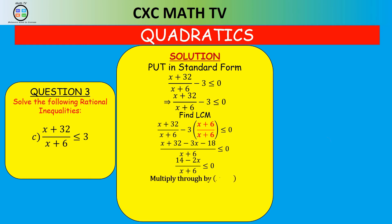We multiply through by the square of the denominator. One of the X plus six terms cancels with the other, so it simplifies to 14 minus 2X times X plus six, less than or equal to zero. The two roots are negative six and positive seven.